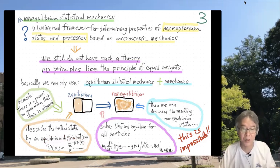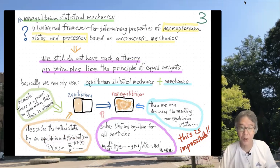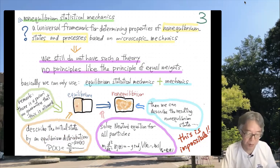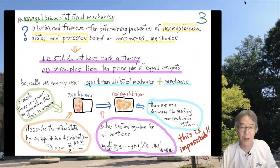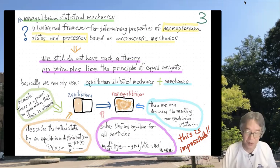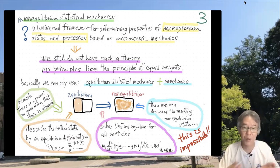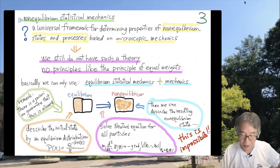If the system is classical, you have Newton's equations. You can in principle solve Newton's equations — they give a very large set of coupled equations for the motions of all the particles. Solving them would describe everything: the non-equilibrium process, the approach to a new equilibrium state, and so on. You could describe the resulting non-equilibrium state by solving this.